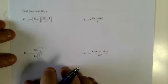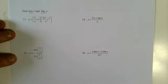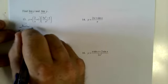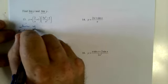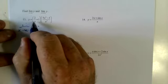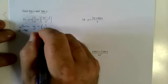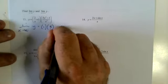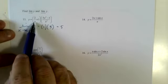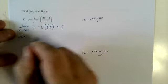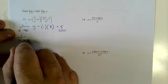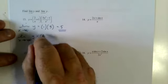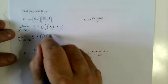Limit as x approaches infinity and as x approaches negative infinity. Well, 2 over infinity is 0, so we get 1 plus something — we get 1. And if I plug in negative infinity, it's not going to change it at all — just going to be 0 plus 1. All the positive terms aren't going to change it at all.